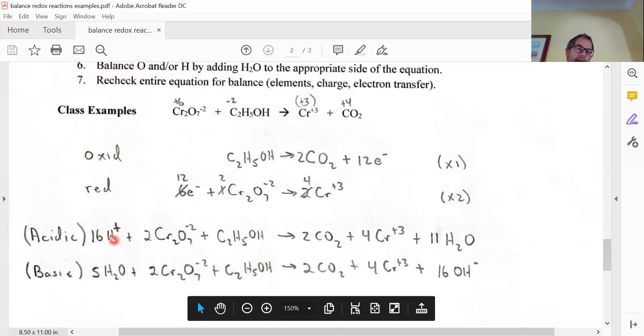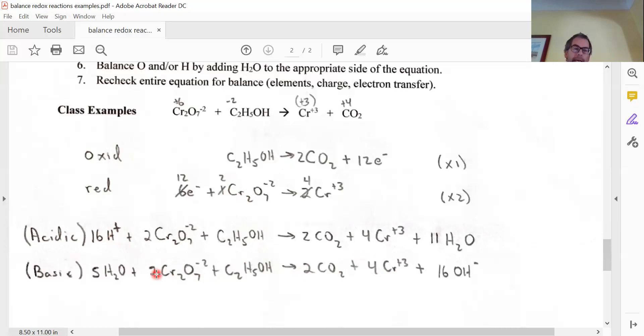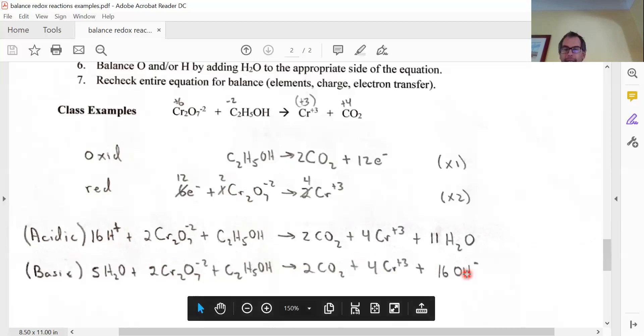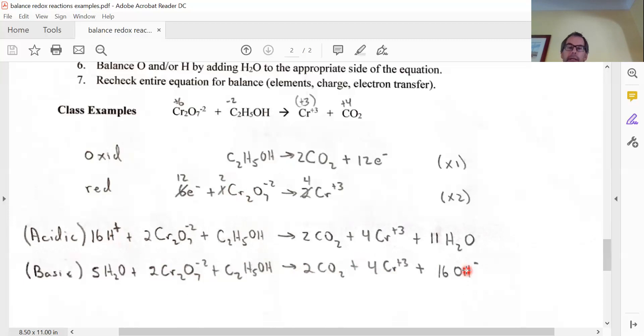And instead of putting 16 H plus over here, when we do it in basic conditions, we have the 16 OH minus over here. So instead of adding 16 H pluses to one side, we take away 16 OH minus from the other side, and that will balance things out.